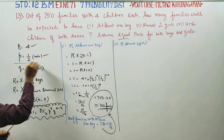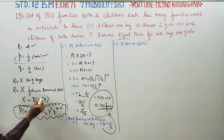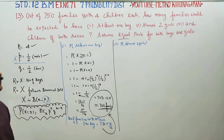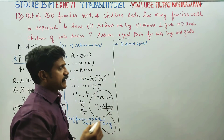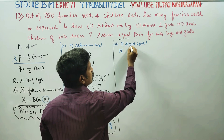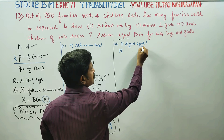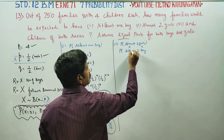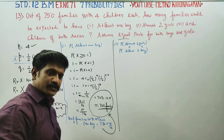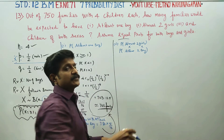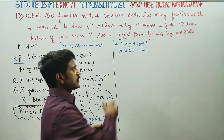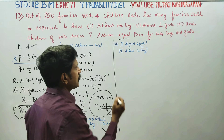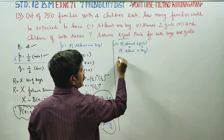For the second part, at most 2 girls with 4 children is the same as at least 2 boys. The probability of at most 2 girls equals 1 minus P(X ≤ 1), covering x = 0 and x = 1 for boys.